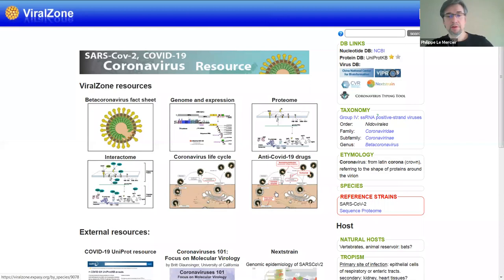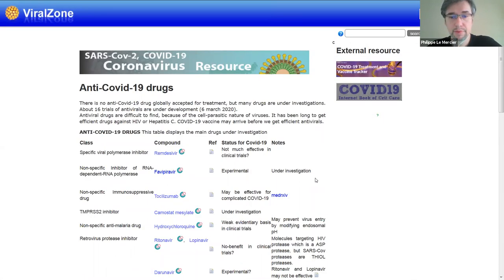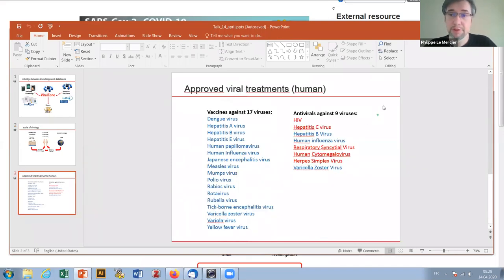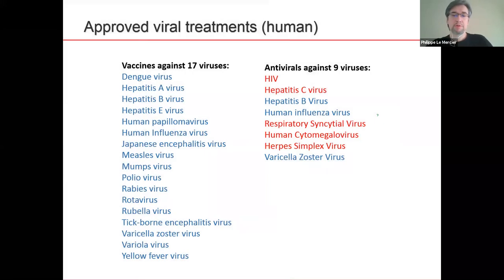Now we are going to speak about the drugs. I just want to highlight things about antivirals in general. To treat viruses, we have vaccines and antiviral drugs. For human viruses, we have 17 viruses for which we have vaccines approved and used in humans. For antivirals, we have only nine viruses. It's lower because it's actually much more difficult to find antivirals than to make a vaccine. To make a vaccine takes about two years, maybe less if you push things up. But for antivirals, it was about 20 years of research for HIV, like 10 years for hepatitis C.